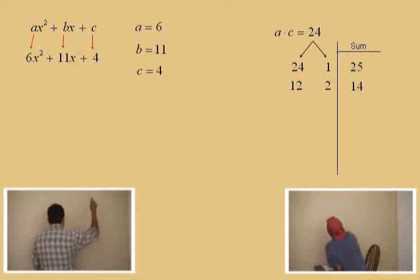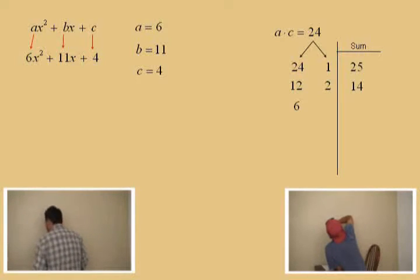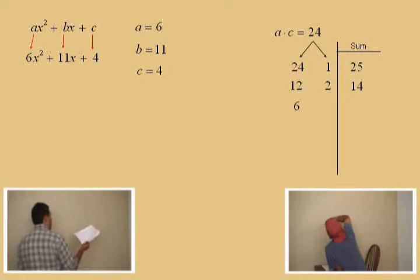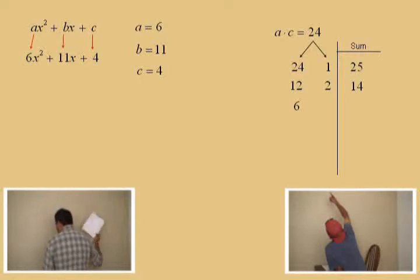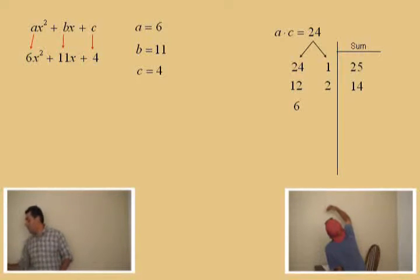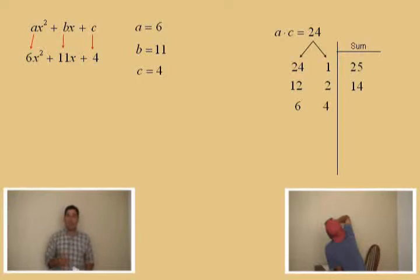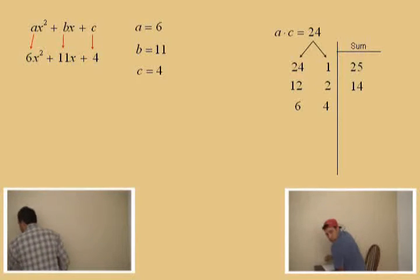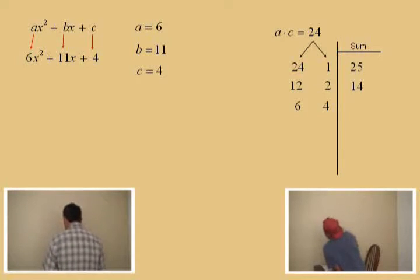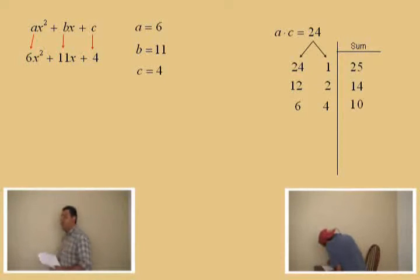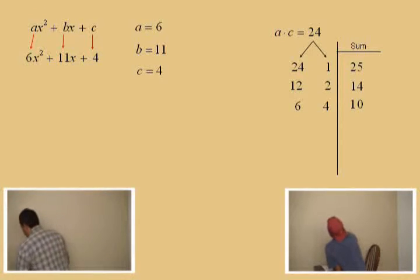Let's take the 12 and divide by 2, Charlie. What do you get? 6. 6. Now, since I divided the 12 by 2, I've got to go to the 2 and multiply by 2. And what does that give you, Charlie? 4. A 4. And notice, 6 times 4 is 24. And what do they sum to, Charlie? 10. They sum to 10. And so, that still is not the b term. So, we've got to continue on.